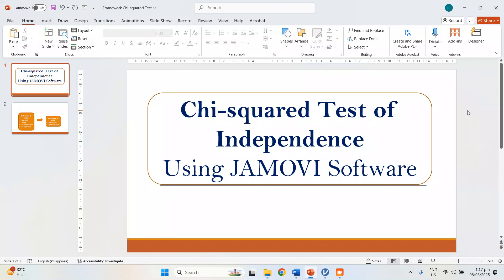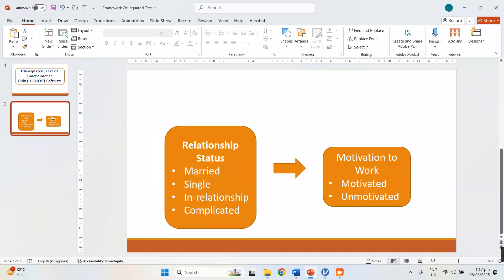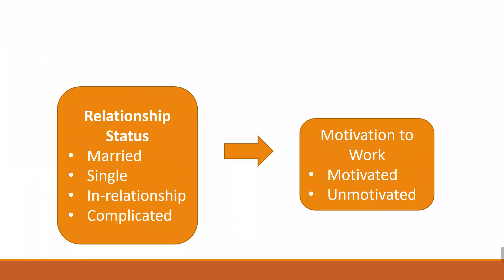In this video, I'm going to teach you how to do a chi-squared test of independence or association using Jamovi software. Assuming that you have a research study with this diagram or schema of the framework of your study, let's say you want to know if there is a relationship between the variables relationship status and motivation to work.